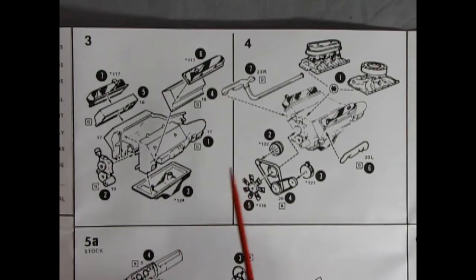Step three and four is the engine assembly. Here we have a left and right engine block with the transmission molded in place, cylinder heads, valve covers, oil pan,